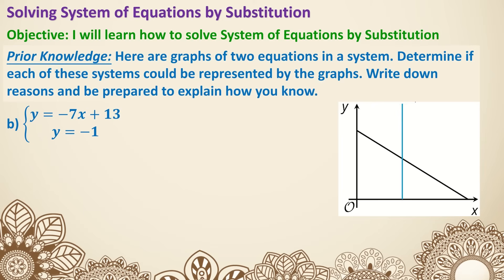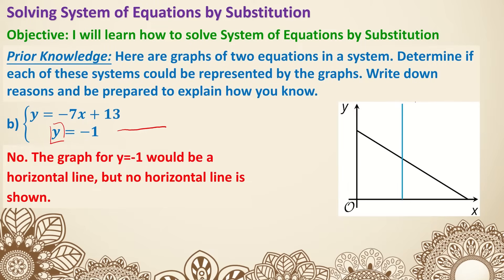B: immediately you see it's y equals negative 1. That's supposed to be a horizontal line that crosses the y-axis. In this case, it does not work.